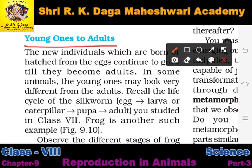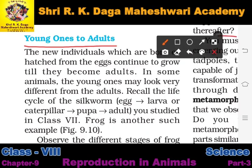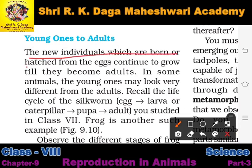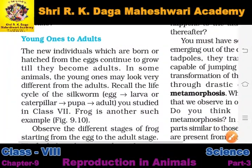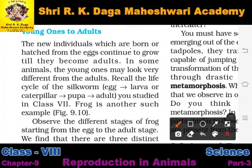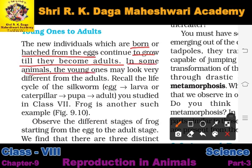The new individuals which are born or hatched from an egg continue to grow. Whether an individual is born normally or hatched from an egg, it grows slowly over time until it becomes a complete adult. In some animals, the young ones may look very different from the adults.